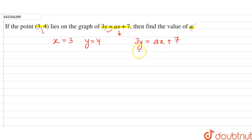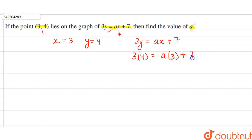So 3 into y means 4, which is equal to a into x, which is 3, plus 7. This gives us 3 into 4 = 12, so 12 = 3a + 7.